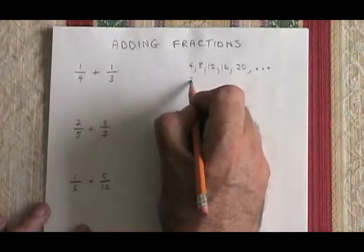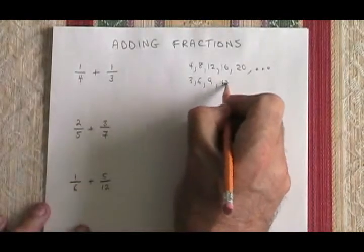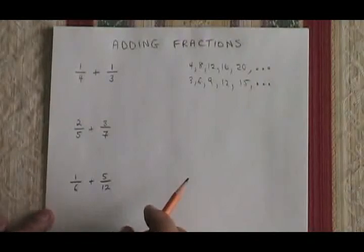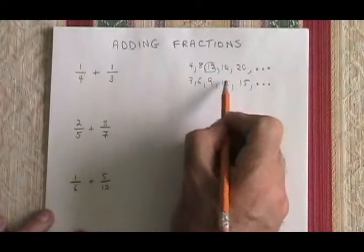3's multiples are 3, 6, 9, 12, 15, and it keeps going. I simply look for the lowest number that's on both lists, and the one I see is 12.